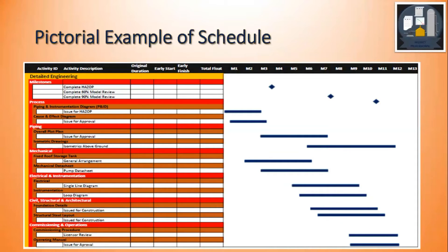Commissioning and operations may include commissioning procedures and operating manuals. Within those are the activities — for example, P&ID issued for HAZID, cause and effect issued for approval, plot plan issued for approval, foundation issued for construction, and so on. We also see milestones. The next level is the activity itself, and on the right side we see the durations of those activities. This is the pictorial example of the schedule.